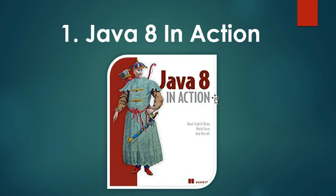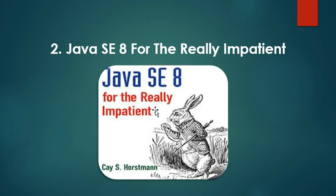This book also covers new functional programming oriented design patterns with Java 8 for code reuse, code readability, exception handling, data manipulation, and concurrency. The next book is 'Java SE 8 for the Really Impatient,' which is another great book to learn the new features of Java 8.